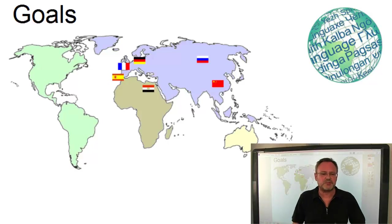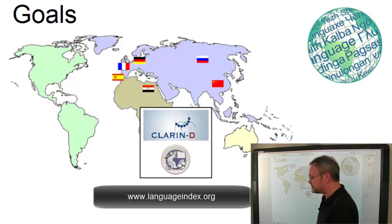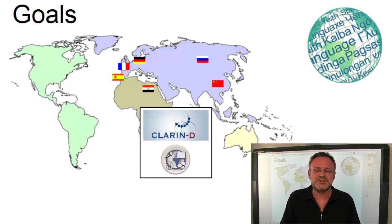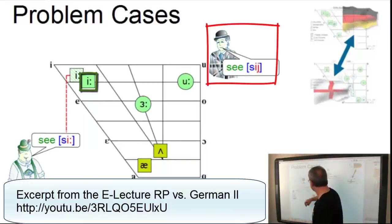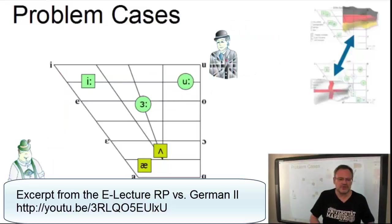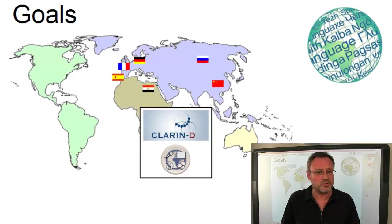For the creation of the MOOC, this means that we have to record contrastive data for these languages as integral parts of our videos. For some languages, such as German, Spanish, and Arabic, we already have contrastive data in our open language index that we created in the context of the CLAR&D research infrastructure. Here is an example of how we integrate such data into a video: the two high vowels, E as in 'see' and U as in 'two', are often produced too high, and Germans tend to produce the monophthongal variant instead of the slight diphthongal realization in RP. The other languages will be added if our MOOC proposal is approved.